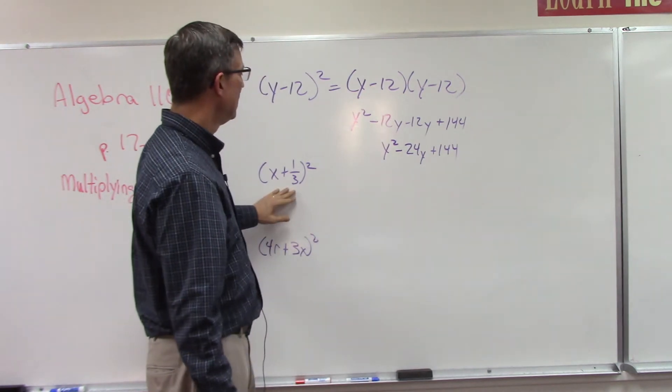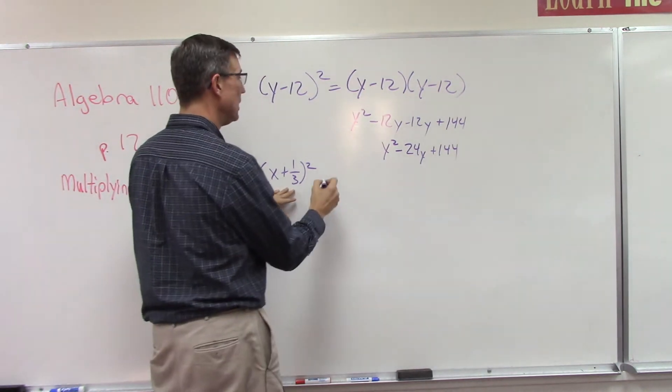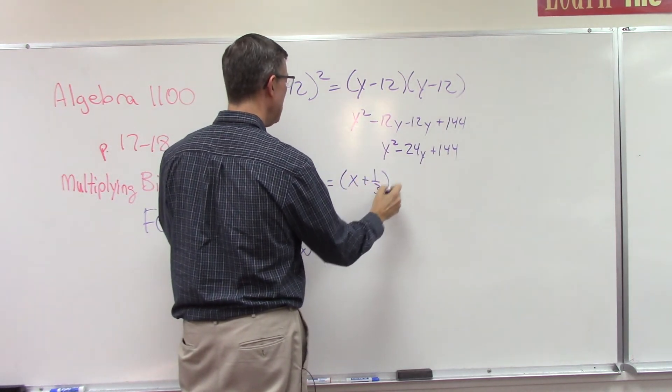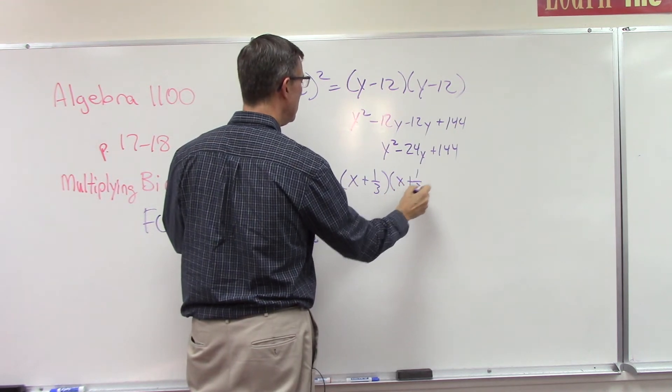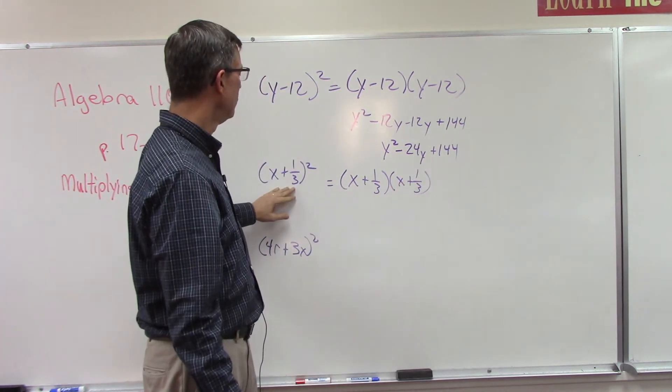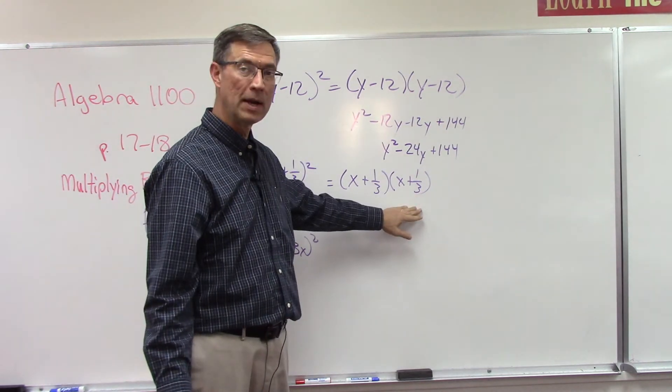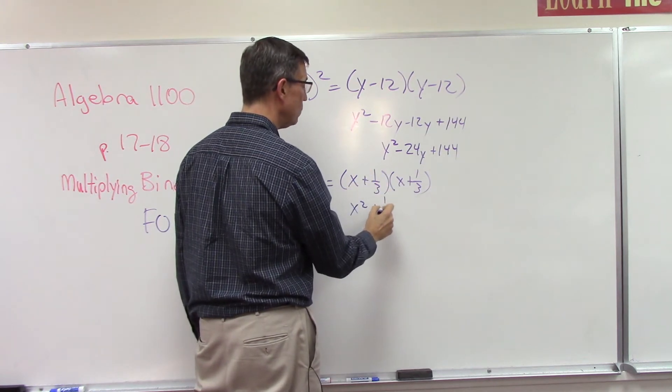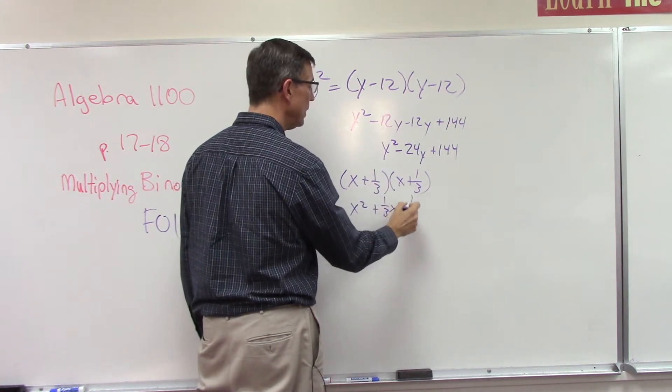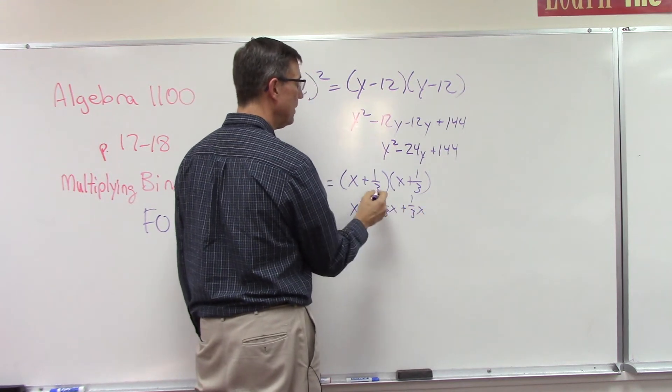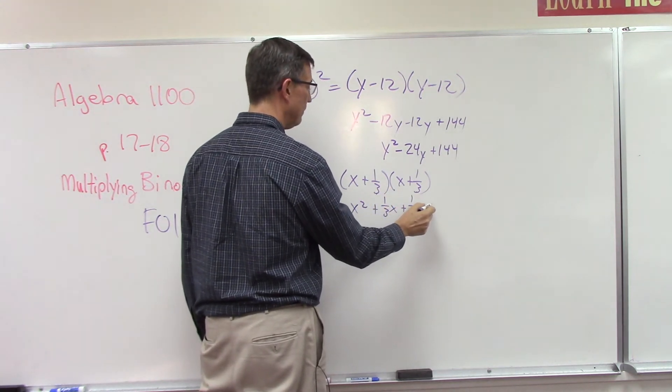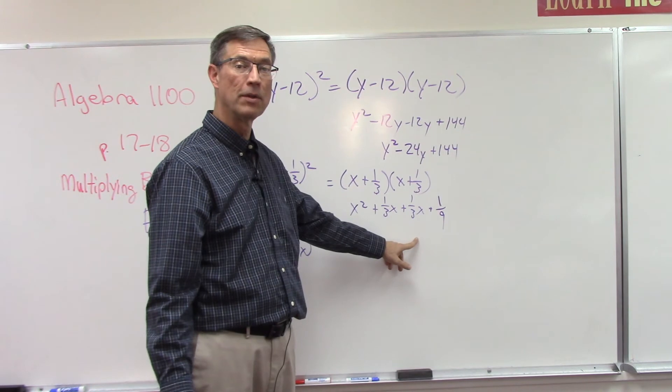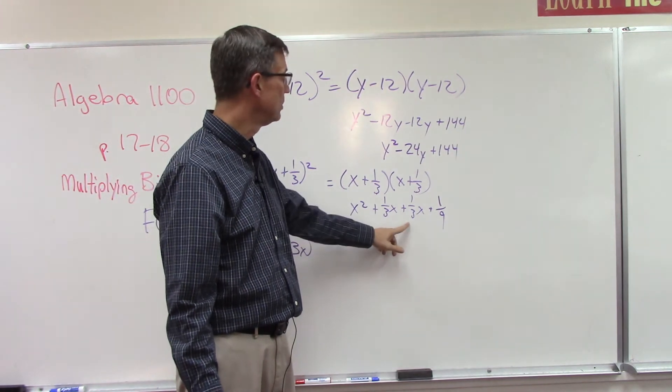Now they throw something with fractions—those always make it interesting. Again, don't cheat, don't skimp. Write it out. Don't try to do this in your head; you will get it wrong. So x plus one-third, the quantity squared—write it out. Now let's try it. X times x is x². X times one-third is one-third x. In the middle we get another one-third x. What's one-third times one-third? One-ninth. Now we can add these together. Remember, they have a common denominator of three, so you can just add and keep the common denominator. I'll let you finish that one.